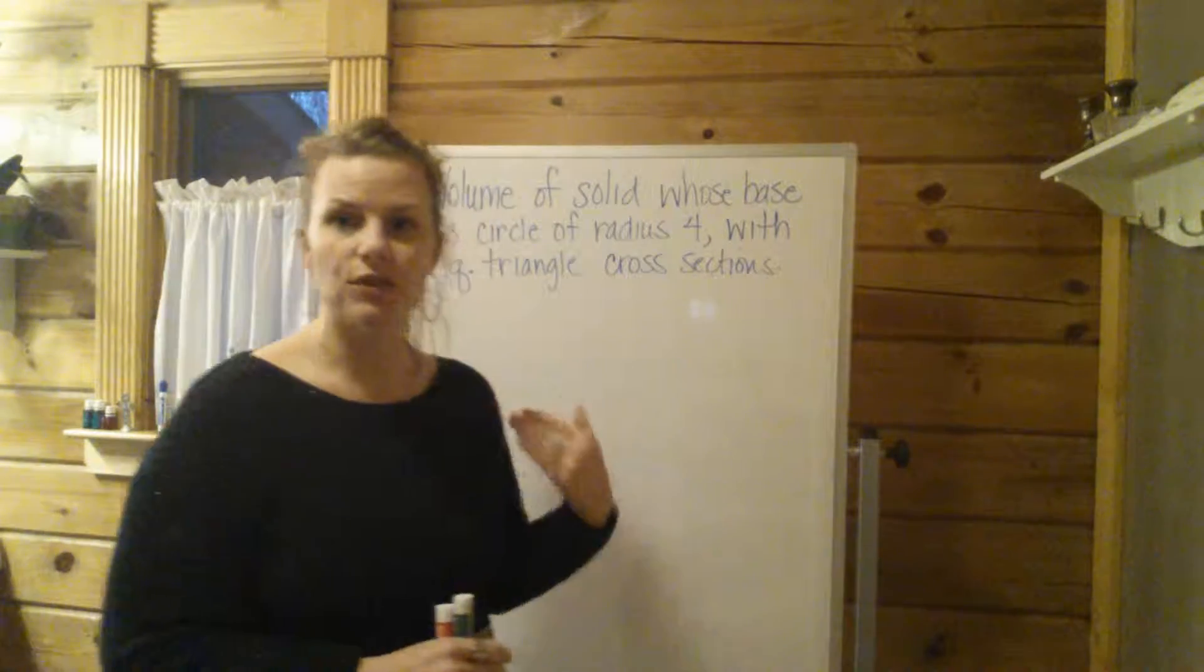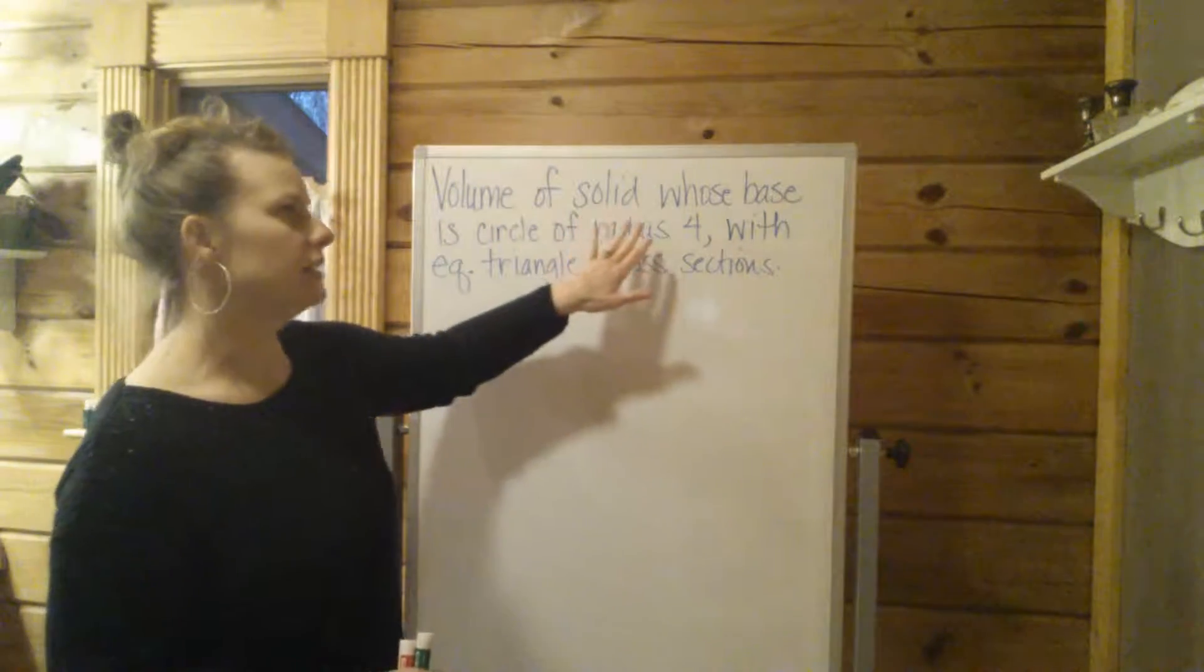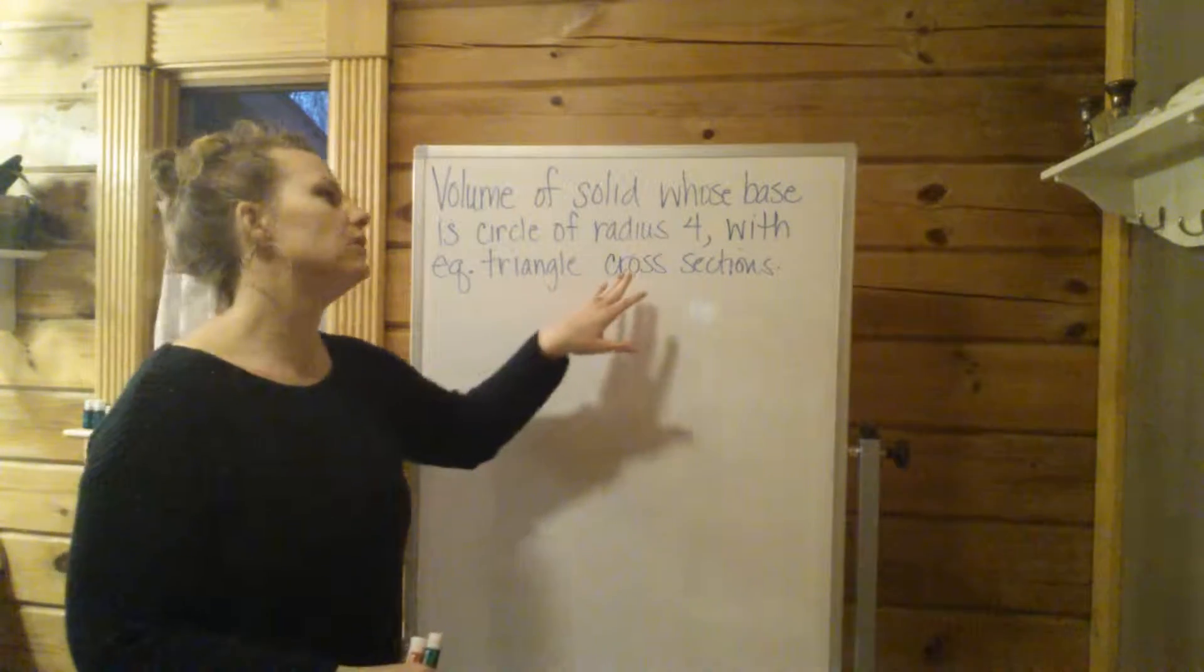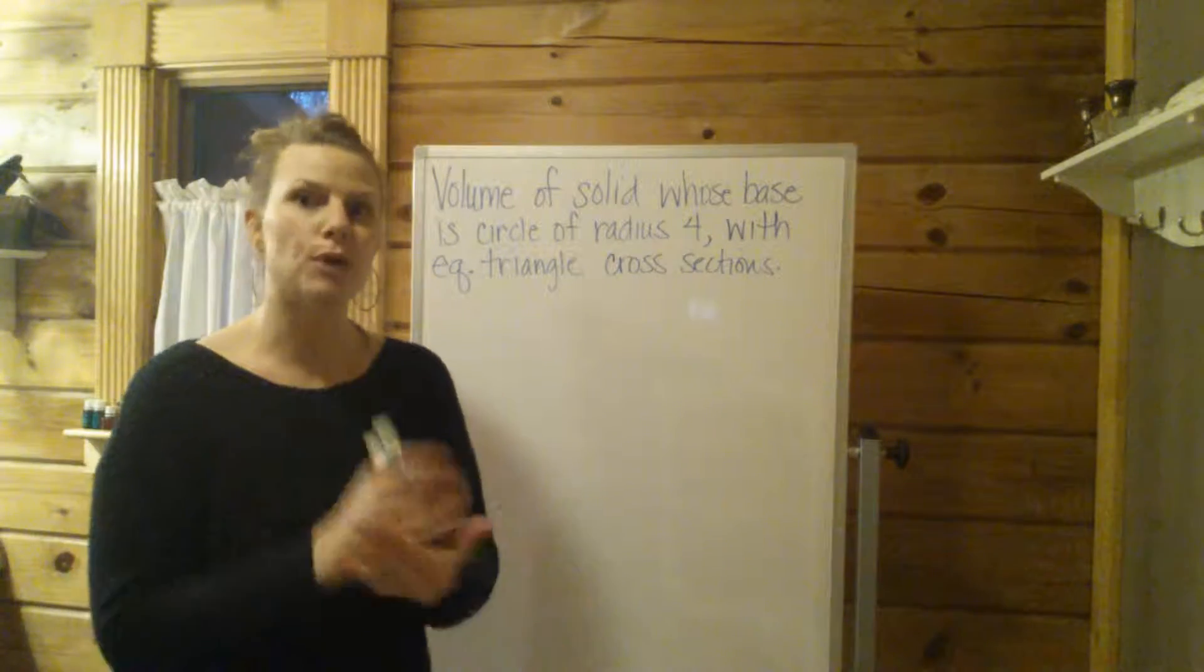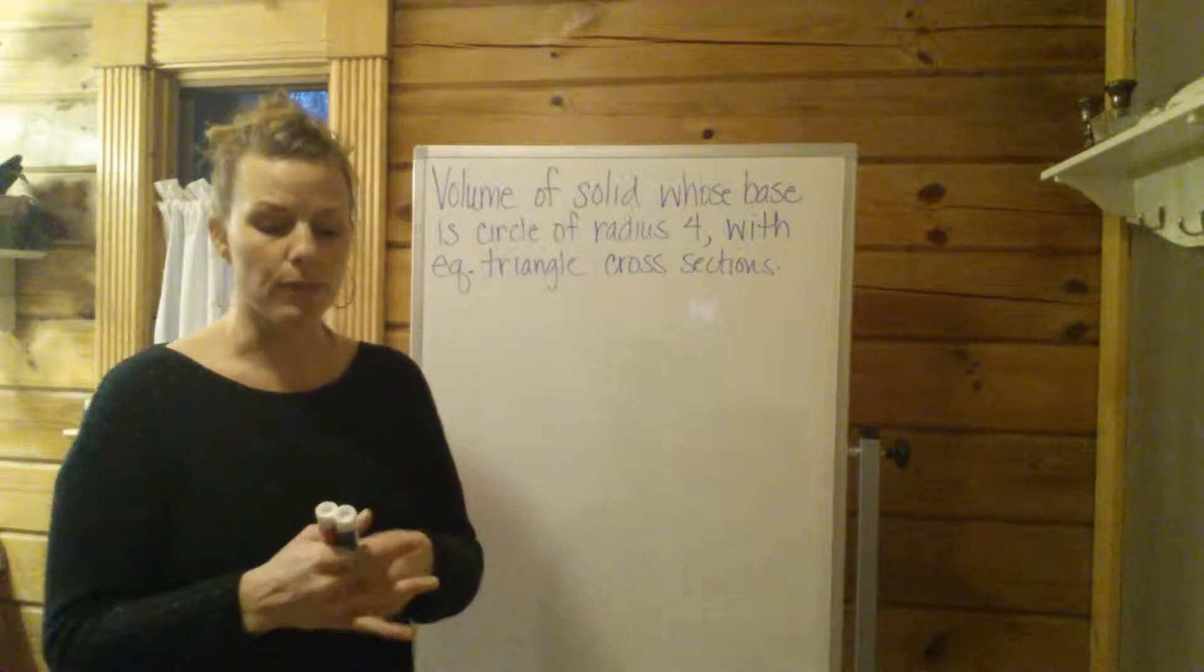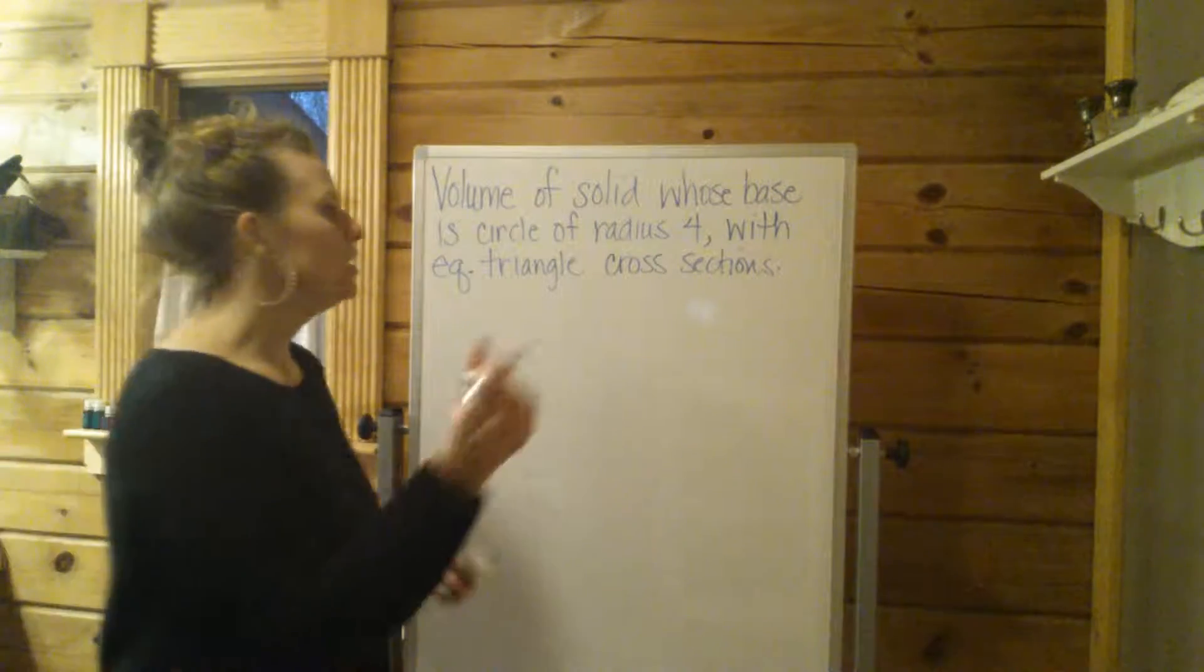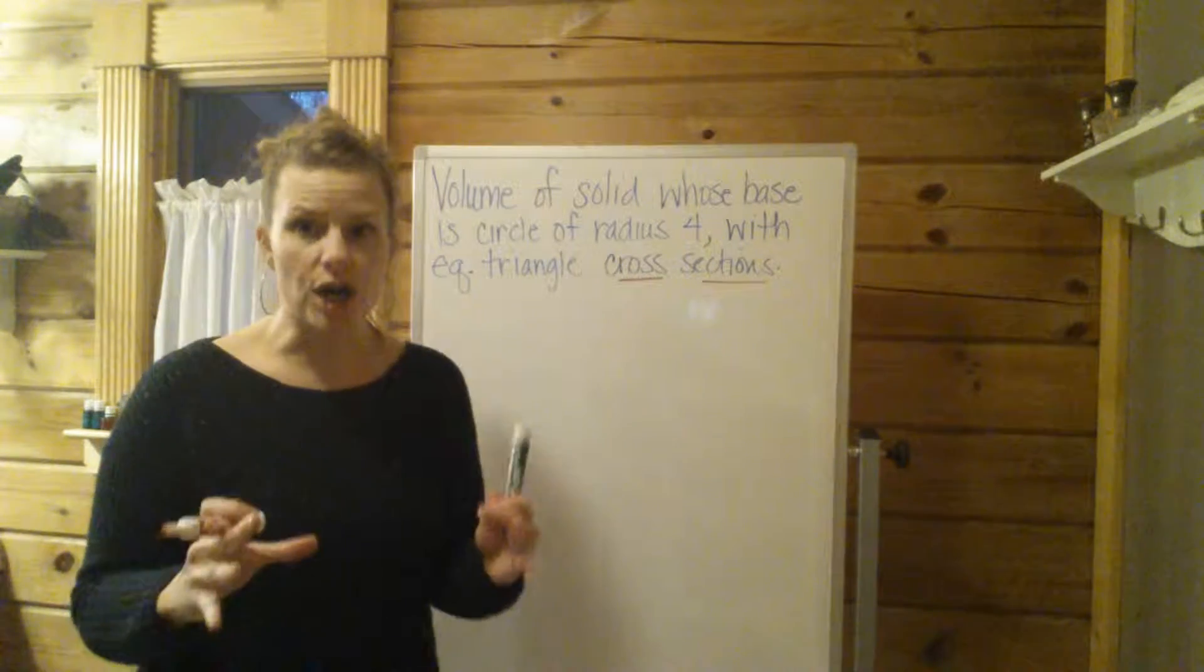Now in this particular volume problem it's going to read something like find the volume of a solid whose base is a circle of radius 4 with equilateral triangle cross sections. It'll say something like the cross sections are perpendicular to the x-axis or something like that. But what I want to draw your attention to is you're finding volume of a solid with some type of base using cross sections. So the key word here is cross-section.